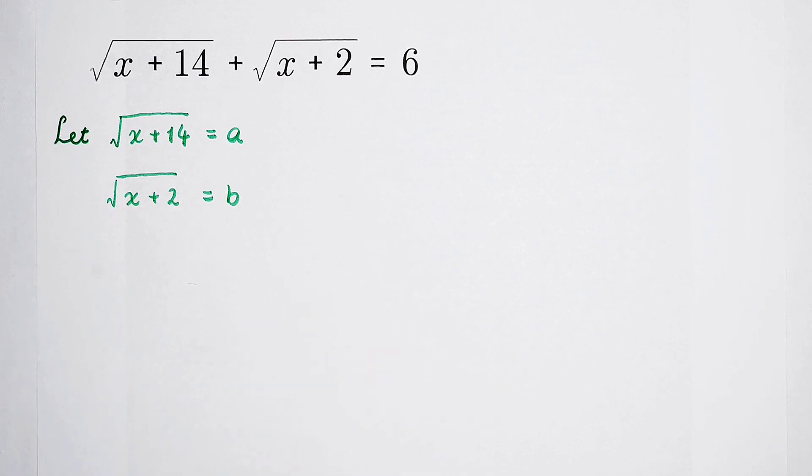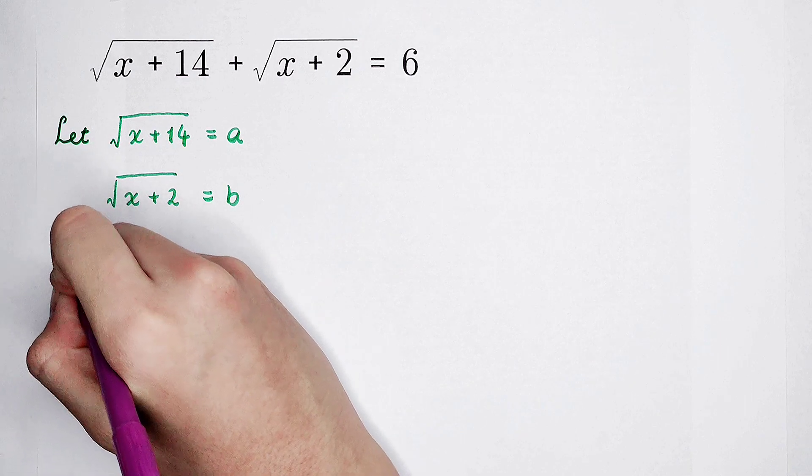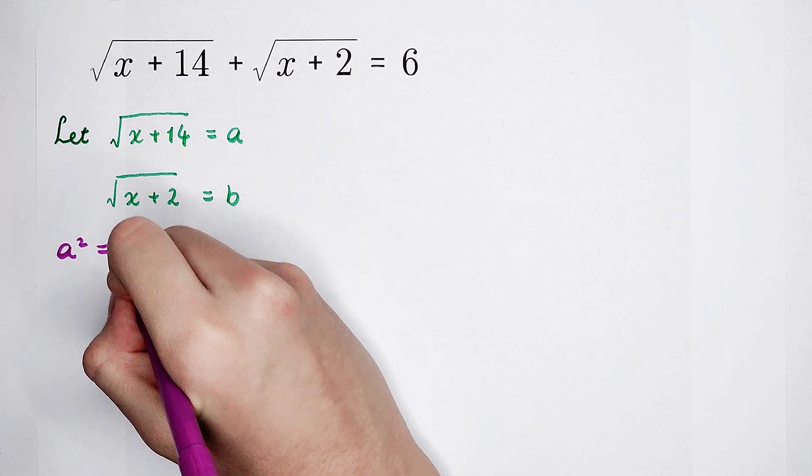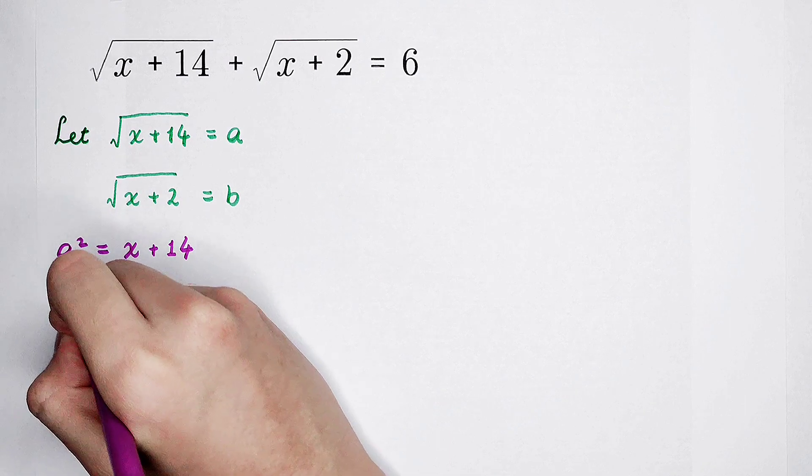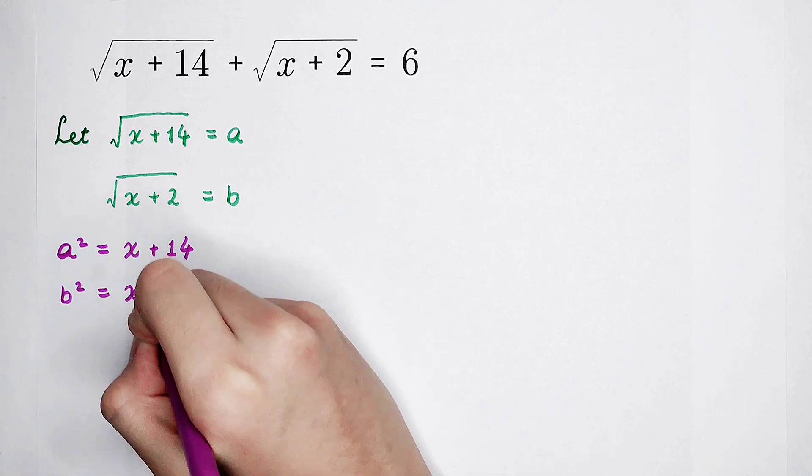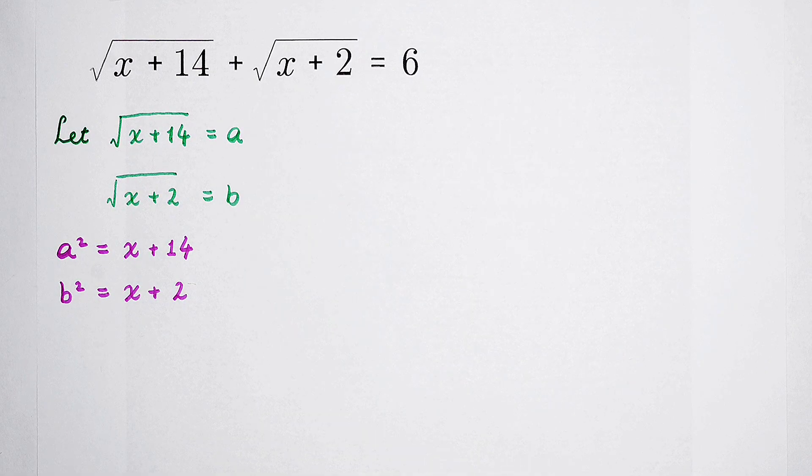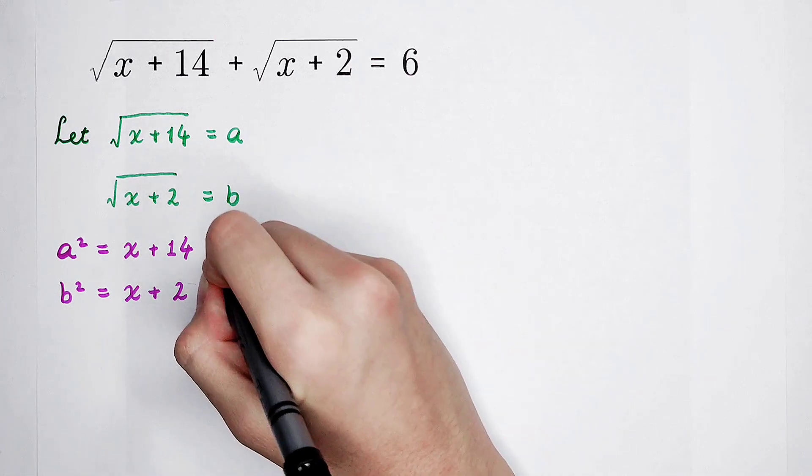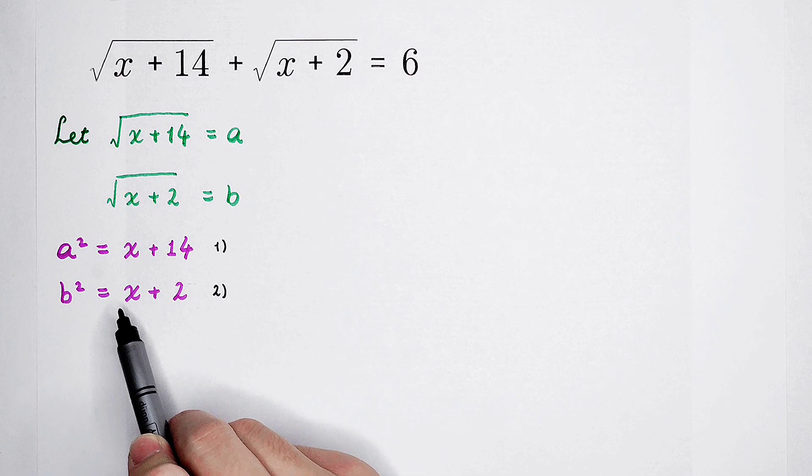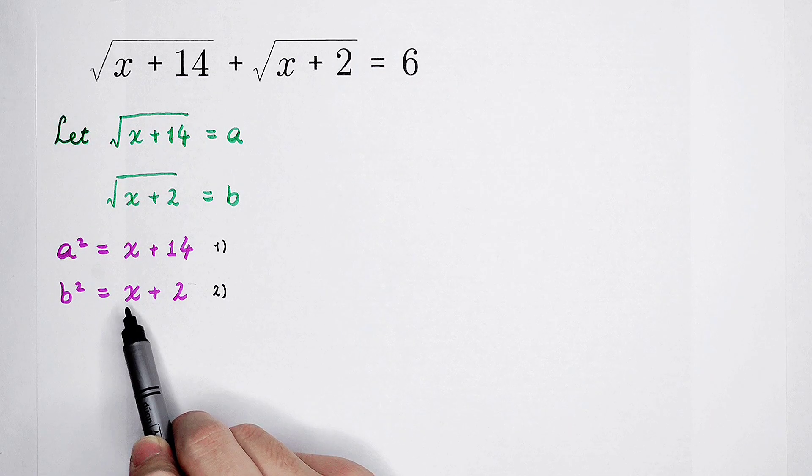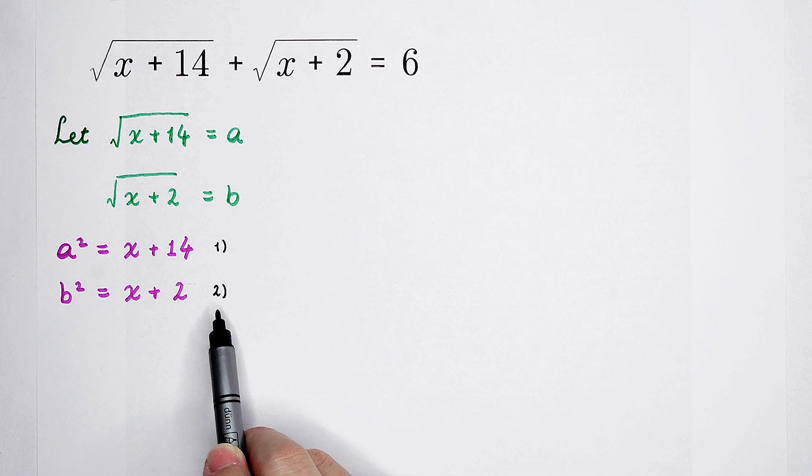So now, we can square both in size on these two equations. So, a squared is x plus 14. And b squared is x plus 2. So, now, these two equations. How should we get another relationship between a and b? Look, x here also x. So, now, we should let the first equation subtract the second one.